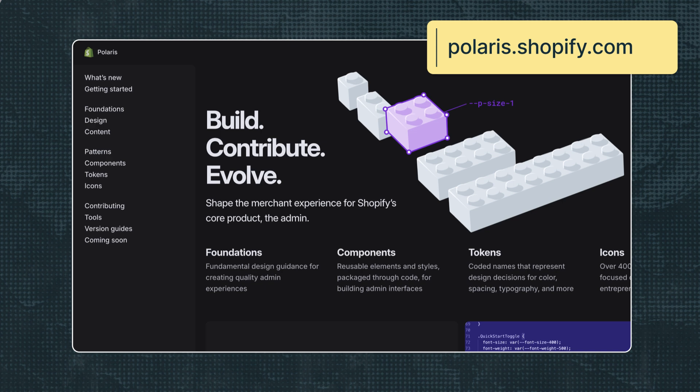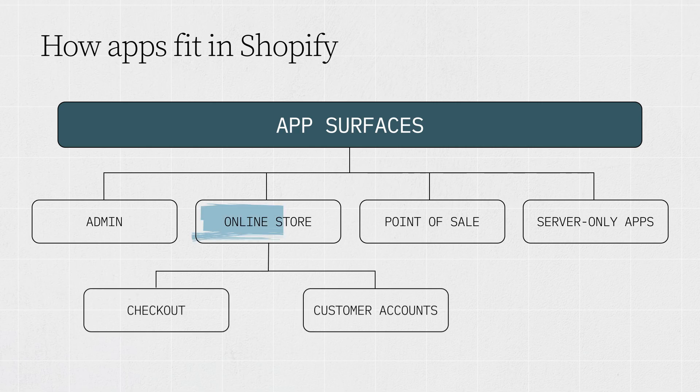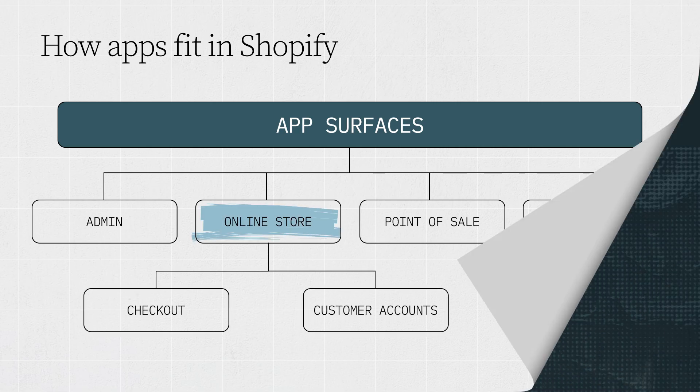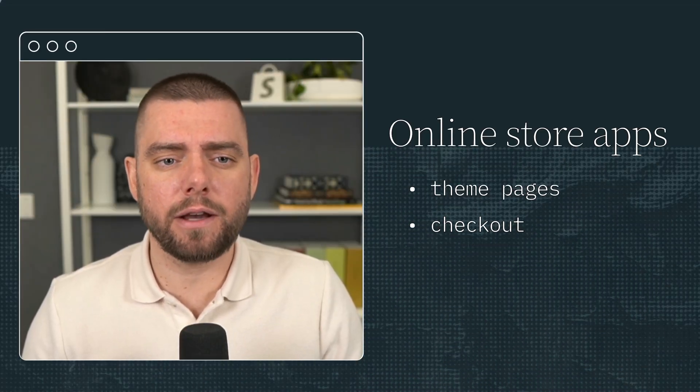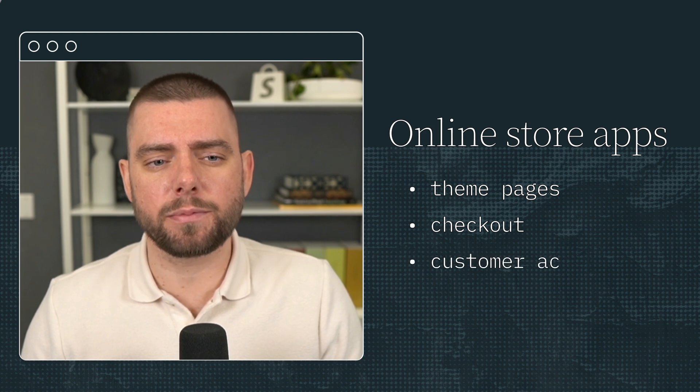You can use Polaris, Shopify's design system, to give your embedded apps the look and feel of the Shopify admin UI. The next surface is the online store. Online store apps access theme pages, checkout, and customer accounts.